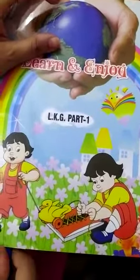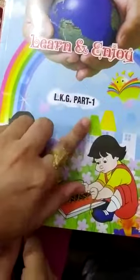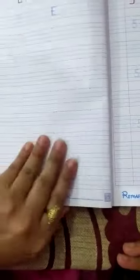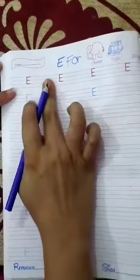Myself Ankita Mehrutra and today I will teach Learn and Joy part 1 book. In this book, take out your page number 25. Students, today we will write E.